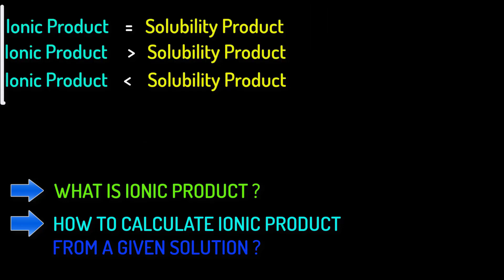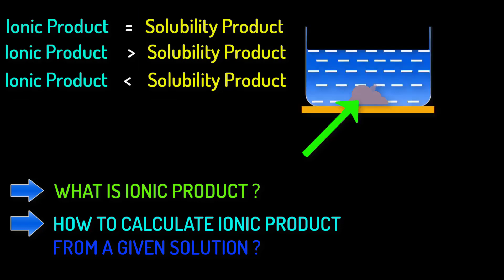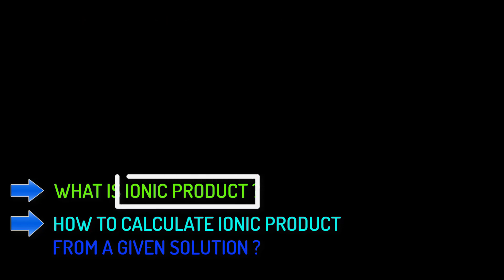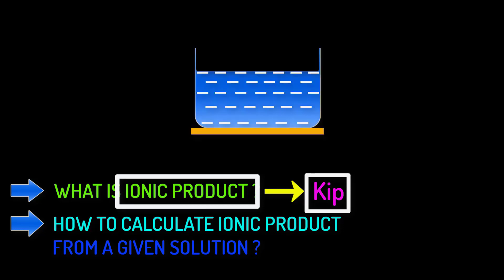Not only that, by comparing ionic product to the solubility product we can determine whether a precipitate will form or not. We express ionic product as KIP and the term KIP is applicable for all types of solutions.